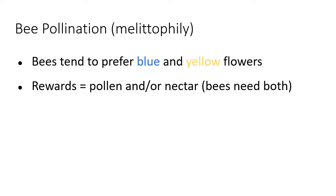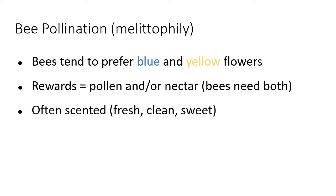Bees have branched hairs all over their body that make them much better pollinators. Flowers that bees like tend to be scented, and the scents are fresh, clean, and sweet — scents that we would like. Bees have a pretty good sense of smell, and these are scents we tend to attribute to cleaning products or laundry detergent. Smells like lavender are smells that bees would like.